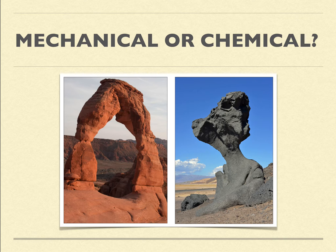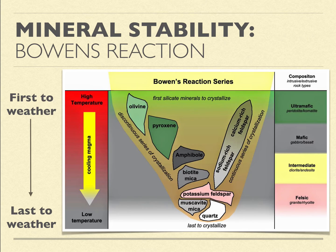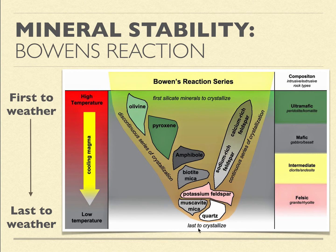Let's talk about a few more things and then we'll wrap up. This is a complex diagram, but Bowen was a scientist who put common sense into a graph, saying that certain types of minerals are more susceptible to weathering, and some are more resilient and able to withstand it.